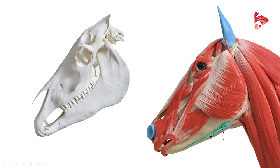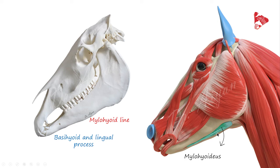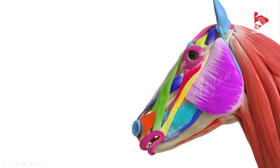The last muscle visible here is the mylohyoideus muscle. It originates from the mylohyoid line on the medial surface of the mandible, extends across to form the ventral cover of the oral cavity, and inserts to the basihyoid and lingual process. The function of this muscle is to elevate the floor of the mouth and press the tongue against the hard palate.